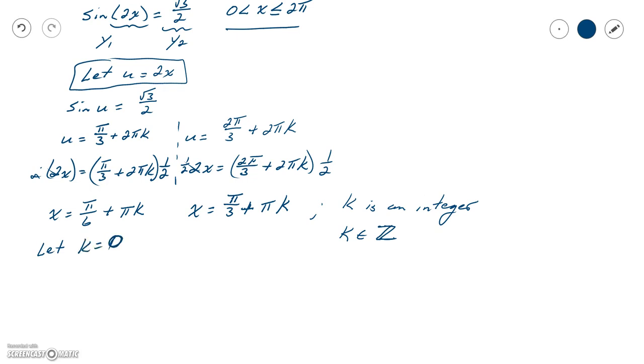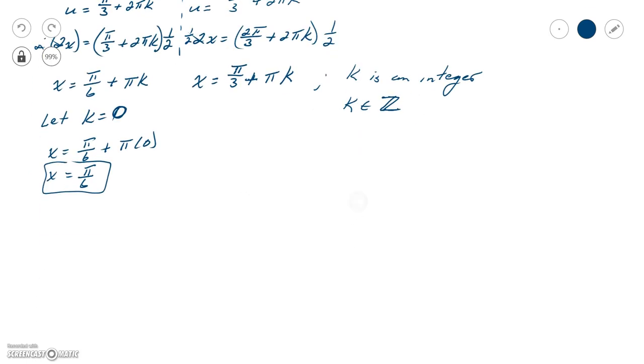If k equals 0, then x is going to be π over 6 plus π times 0. Well, that's just going to be π over 6. And since π over 6 is between 0 and 2π, we're going to say that that is one of our solutions.